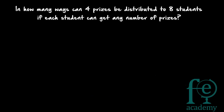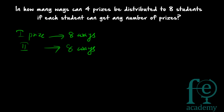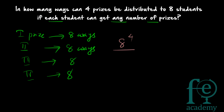Second question: in how many ways can 4 prizes be distributed to 8 students if each student can get any number of prizes? There is no restriction. The first prize can be given in 8 ways. The second prize can again be given in 8 ways. The third and fourth prizes can also each be given in 8 ways. So in total, 8 × 8 × 8 × 8 = 8⁴ ways to distribute the prizes.